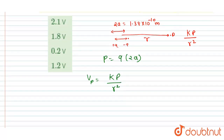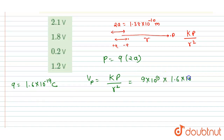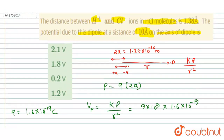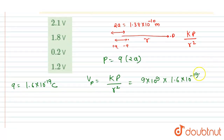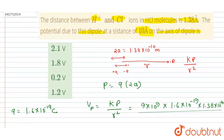The H+ ion has a charge of +1.6×10⁻¹⁹ coulombs and the Cl- ion has -1.6×10⁻¹⁹ coulombs. So q = 1.6×10⁻¹⁹ C. Now substituting: k = 9×10⁹, p = 1.6×10⁻¹⁹ × 1.38×10⁻¹⁰, and r = 10 angstroms.